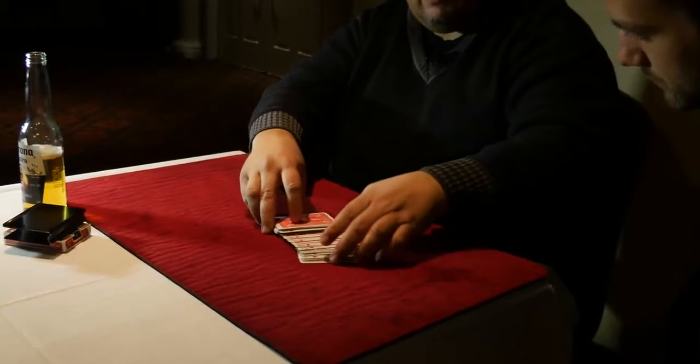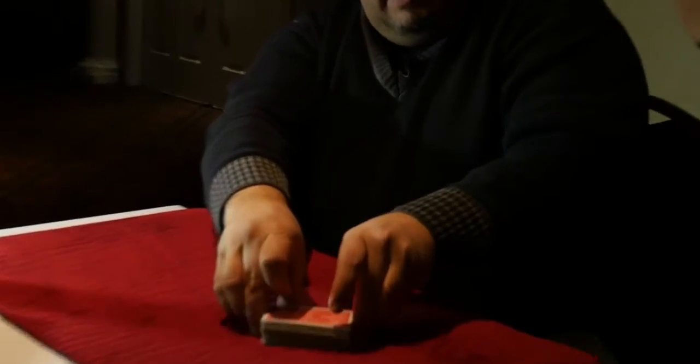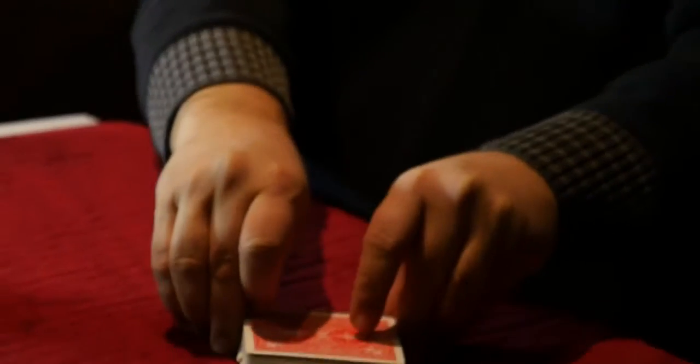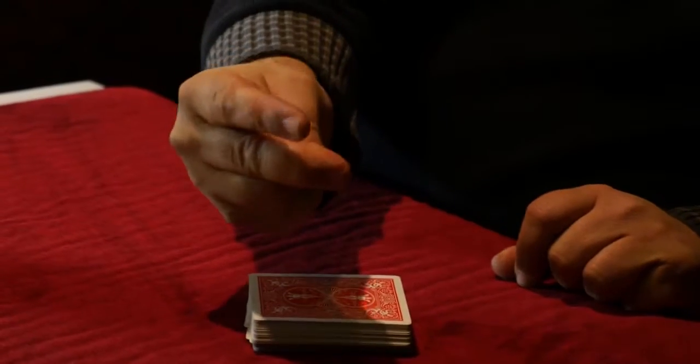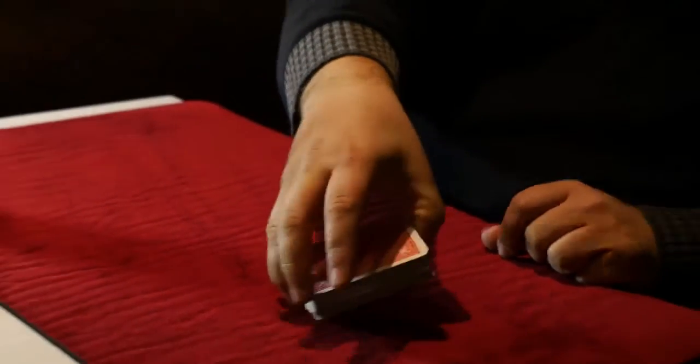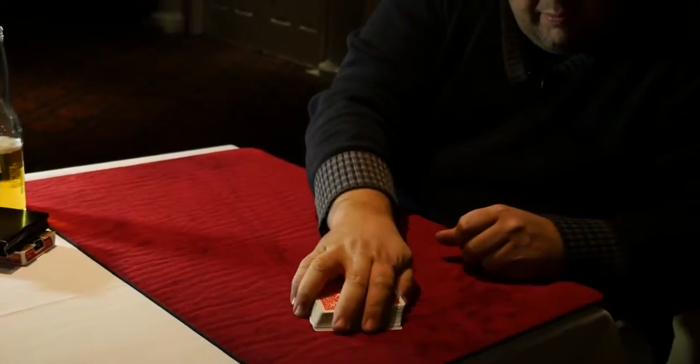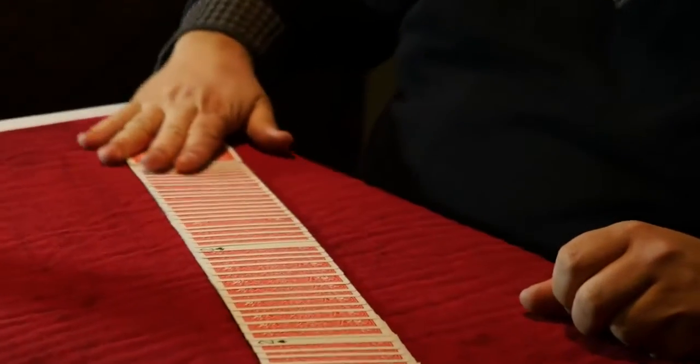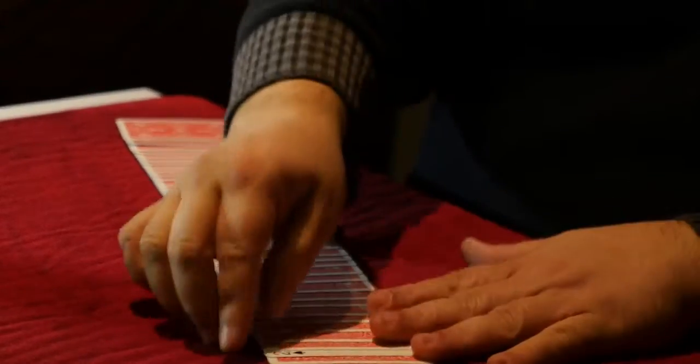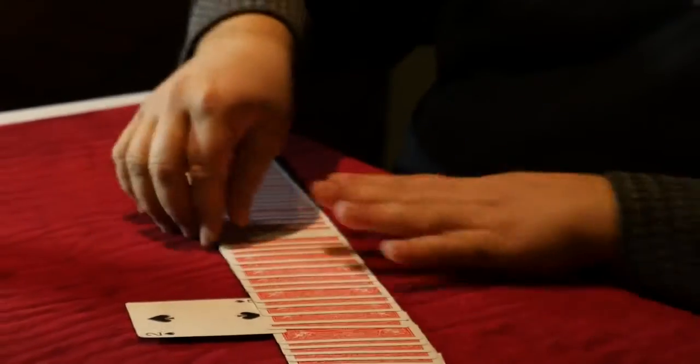All I do is I square the deck. Gently. And now, all of the cards that are face up turn face down, all except for the two twos. The card you chose, and its mate. Incredibly.